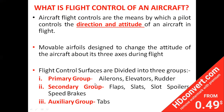The primary group consists of ailerons, elevators, and rudder. The secondary group consists of flaps, slats, slots, spoilers, and speed brakes. The auxiliary group consists of tabs.